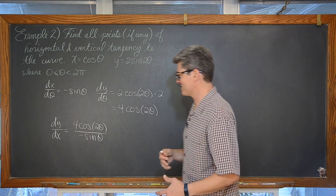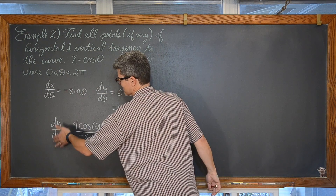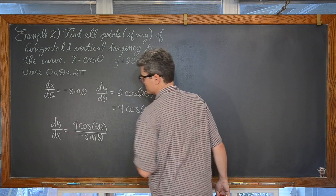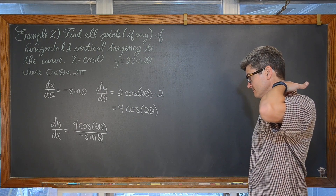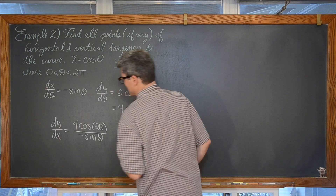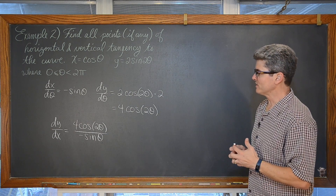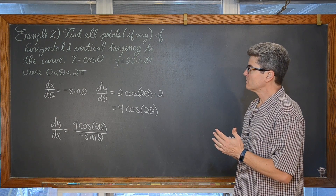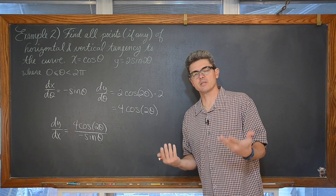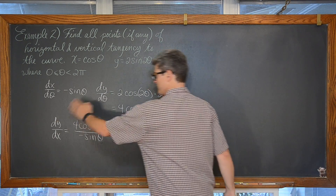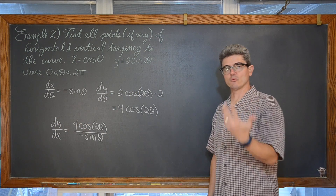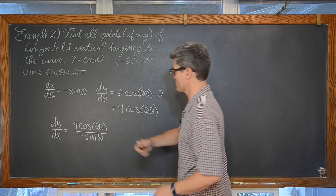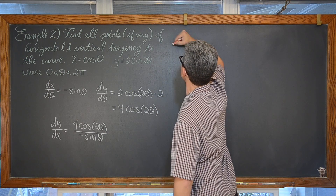It is a bit unusual to have a derivative with respect to x where the independent variable doesn't match, but that is our derivative of this curve. For horizontal tangent lines, the derivative equals zero. Since our derivative is a rational function, the numerator must equal zero. So for horizontal tangency points, we set 4 cosine of 2 theta equal to zero.